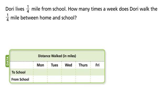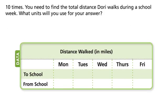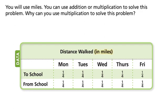Dory lives one-fourth mile from school. How many times a week does Dory walk the one-fourth mile between home and school? Ten times. You need to find the total distance Dory walks during a school week. What units will you use for your answer? You will use miles.